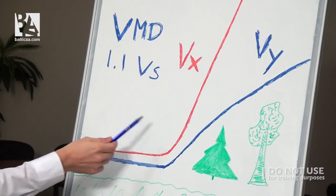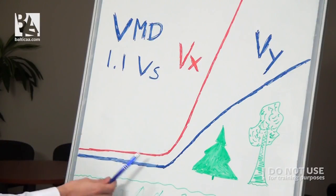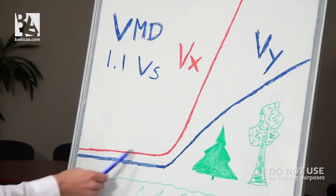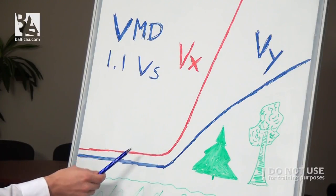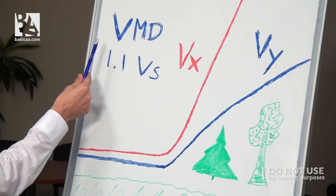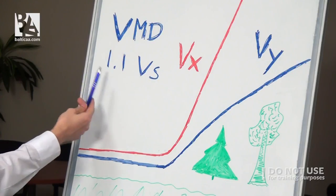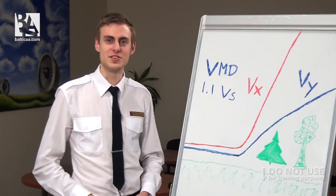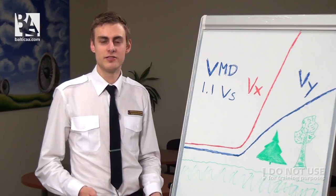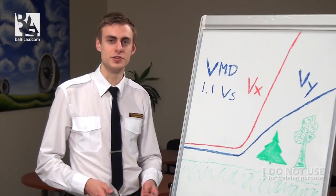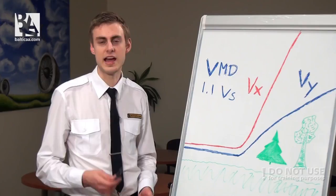Vx is the best angle of climb speed and Vy is the best rate of climb speed. If we climb with Vx, we will cover less ground distance but climb with a slower speed. If we climb with Vy, we will have a better rate of climb and a higher airspeed. The best climb speed Vy for a jet is minimum drag speed, and for a propeller it is 1.1 multiplied by the stall speed. It's also important to know that you will have a better rate of climb in a clean configuration. Flaps are good to reduce your takeoff distance but will reduce your vertical speed. And if you want to avoid obstacles, the best speed is the best angle of climb speed.